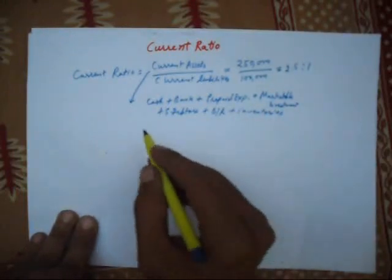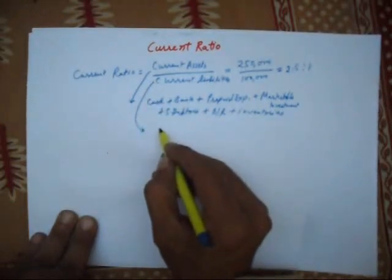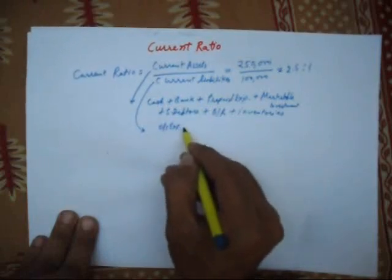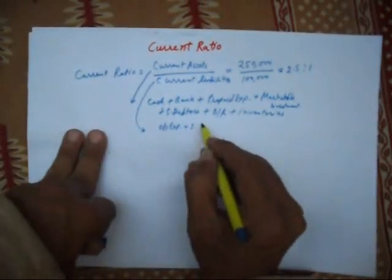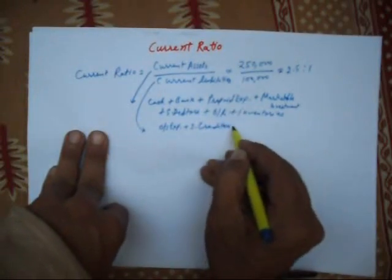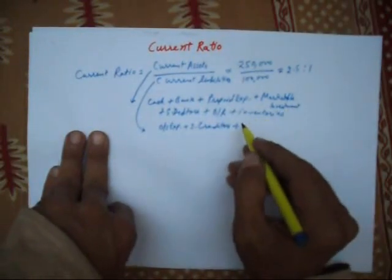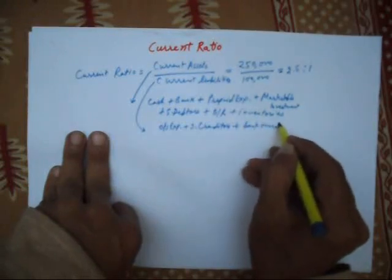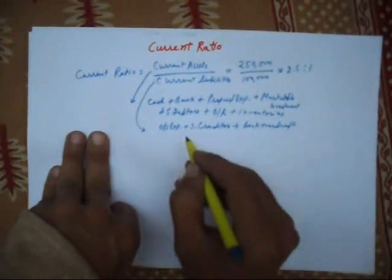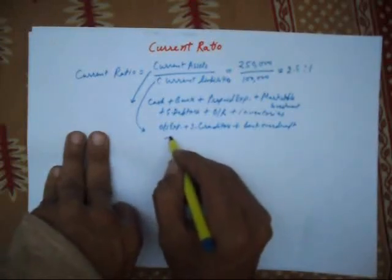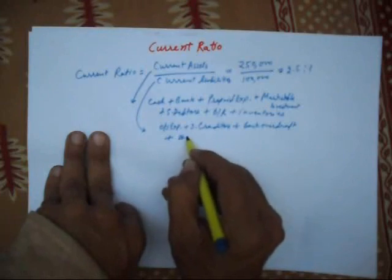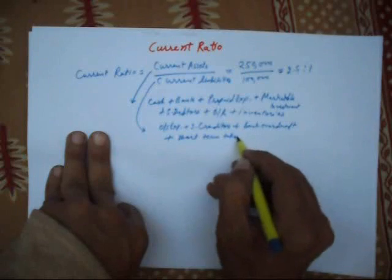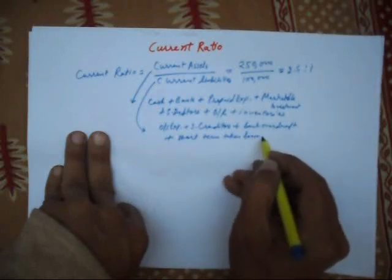In current liabilities we can include outstanding expenses, sundry creditors, bank overdraft, and short term taken loans and advances.